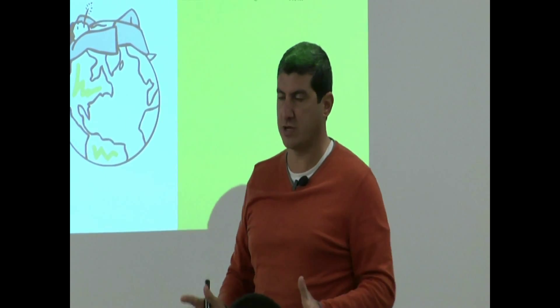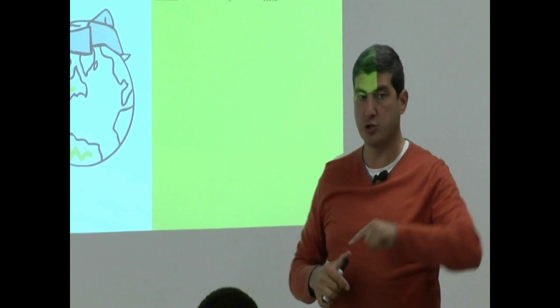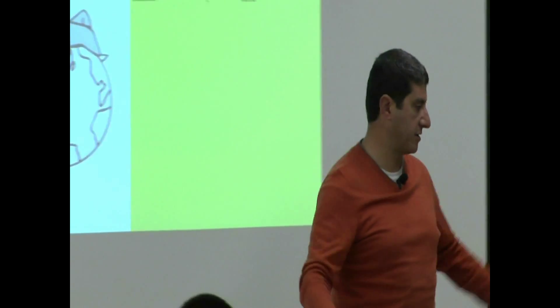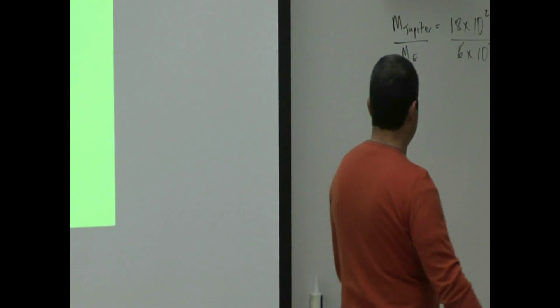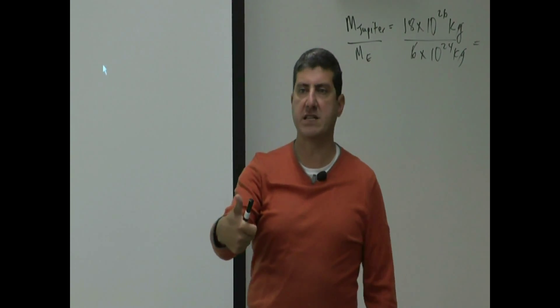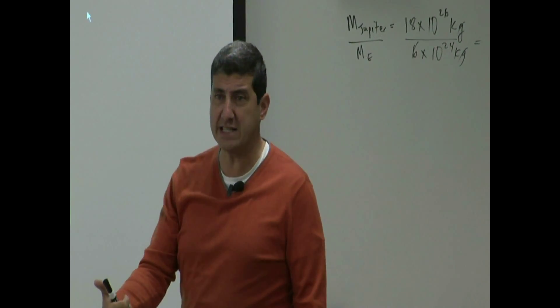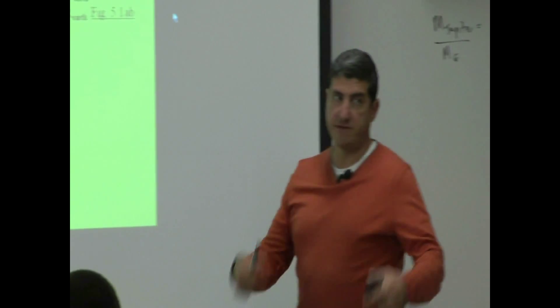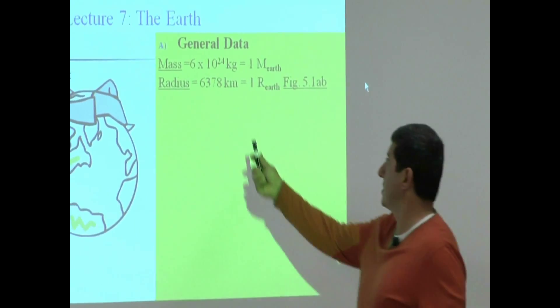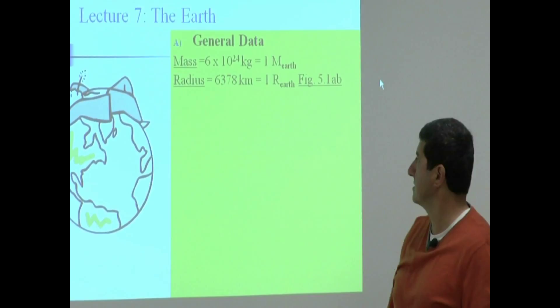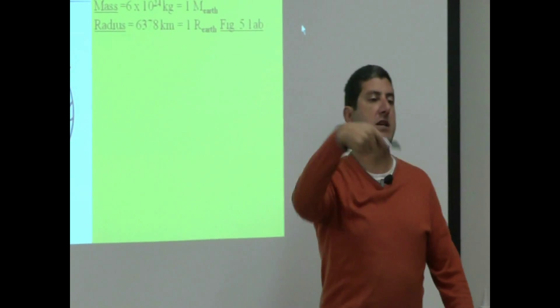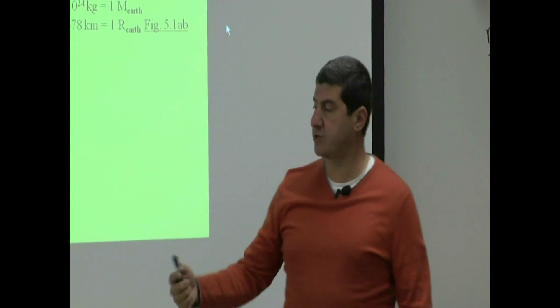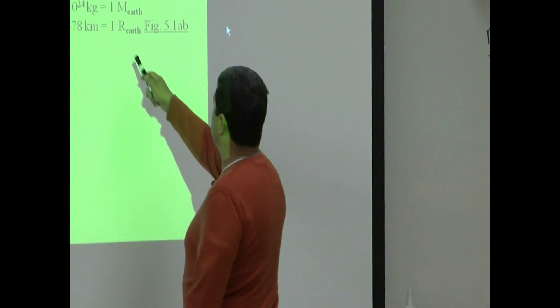That means Jupiter would be about 300 times heavier than the Earth — roughly speaking, that's what the mass of Jupiter is. So when you report the mass of a planet, tell us what its mass is and also tell us what its mass is in relation to the Earth. Similarly for radius — when you tell us the radius of a planet, give it in kilometers and compare it to the radius of the Earth. We'll call this 1R_Earth.